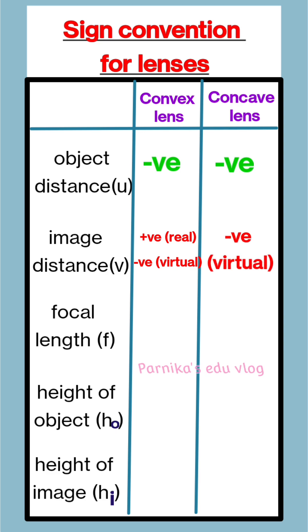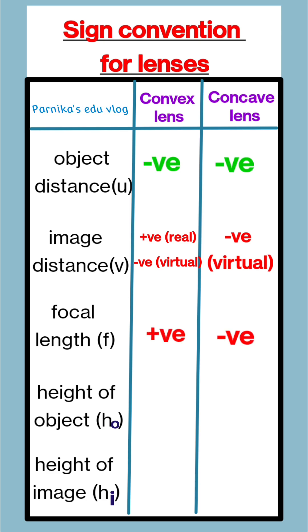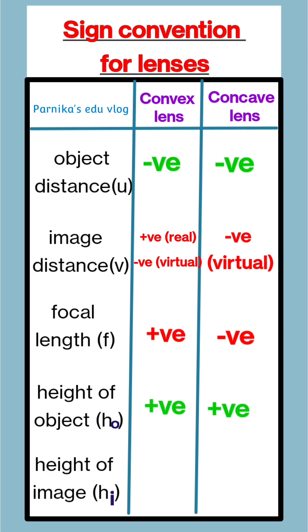Focal length f is always positive for convex lens and negative for concave lens. Height of object h0 is always positive for both the lenses.